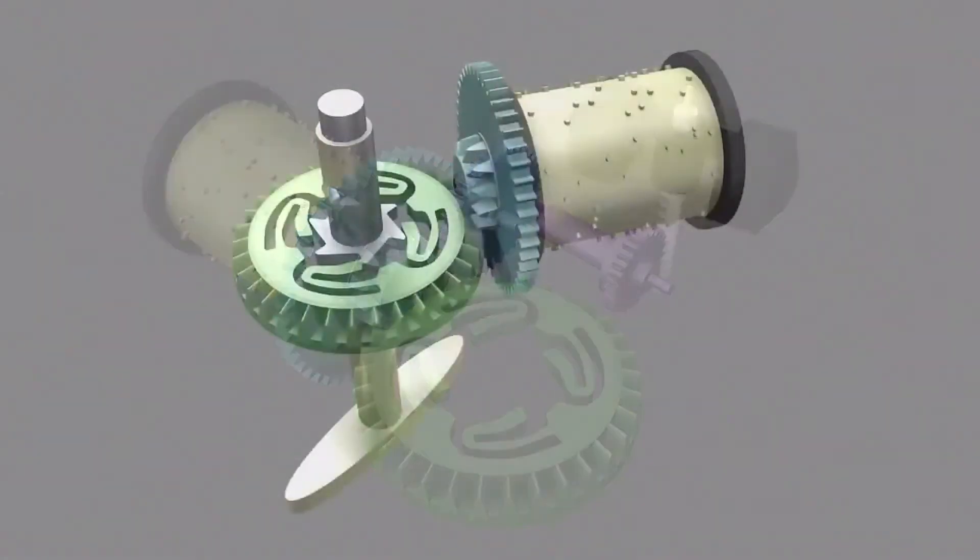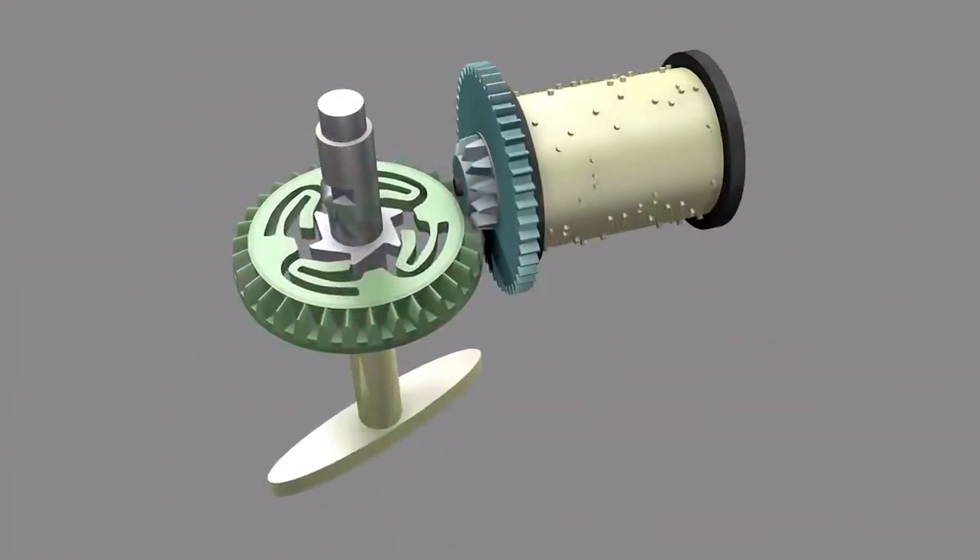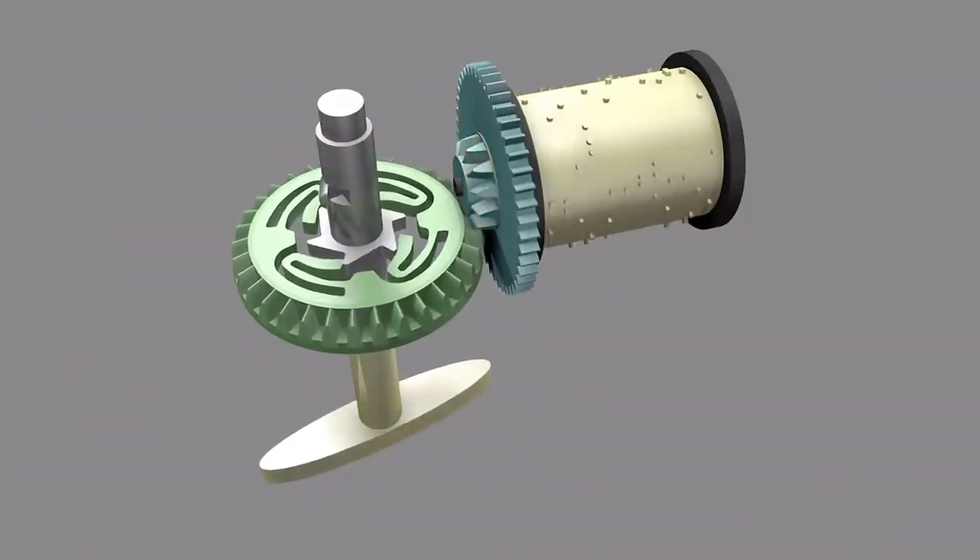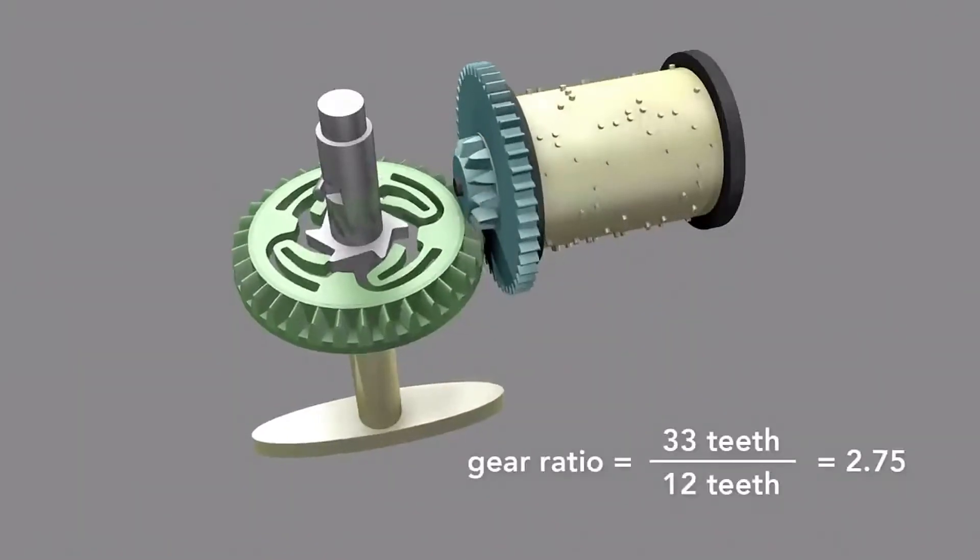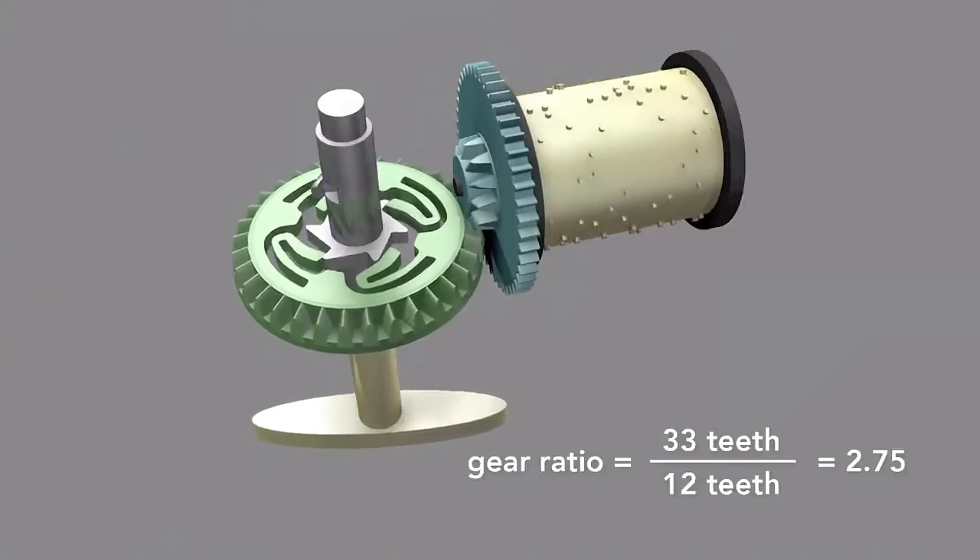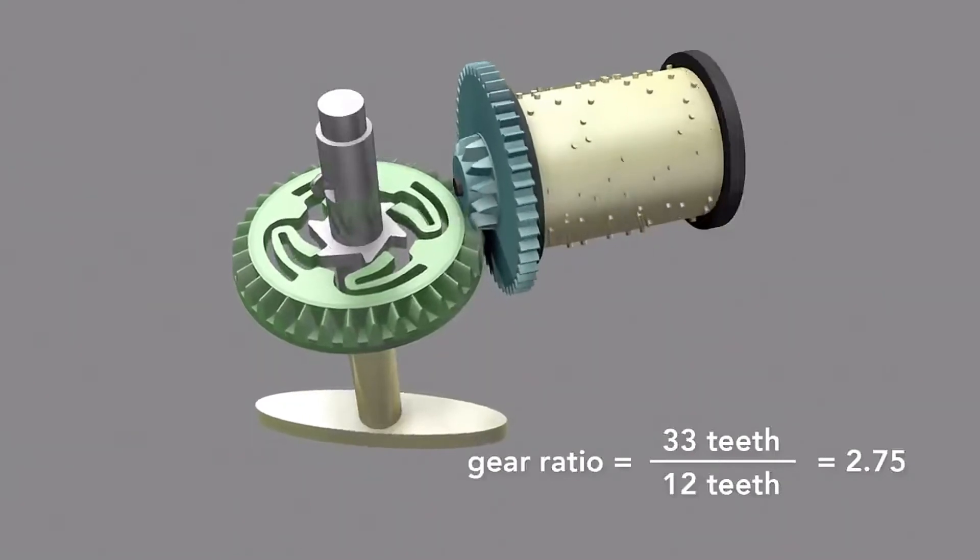To spin the governor so fast, the music box uses a multiplying gear train. It starts with the bevel gear driven by a spring, which engages a smaller gear on the drum. This multiplies the rotational rate by the ratio of the number of teeth on the larger gear to the number of teeth on the smaller gear, here 2.75 times.